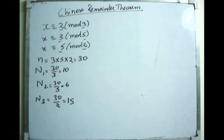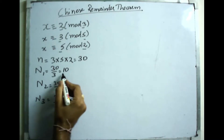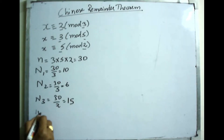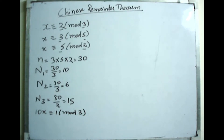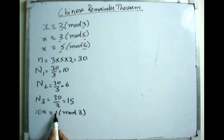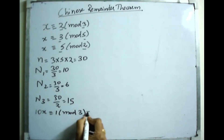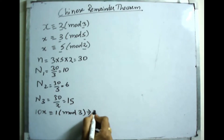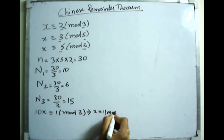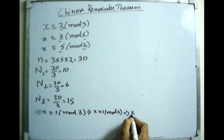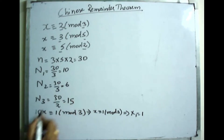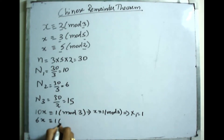Using the theory of single linear congruences: gcd(10, 3) = 1, so 10x ≡ 1 mod 3 has a unique solution. Since 10 mod 3 = 1, this reduces to x ≡ 1 mod 3, and clearly x = 1 satisfies this. So x1 = 1.